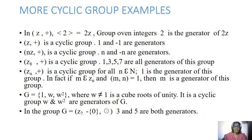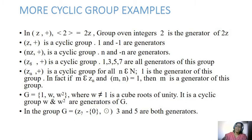The group G with elements 1, ω, ω² where ω is a cube root of unity is a cyclic group. ω and ω² are generators of the group G. In the group Z₇ without 0 under multiplication, 3 and 5 are both generators. These are a few more examples of cyclic groups.